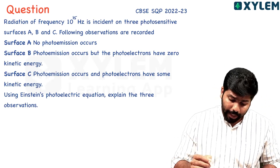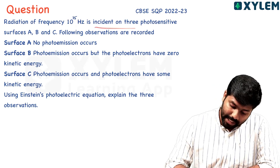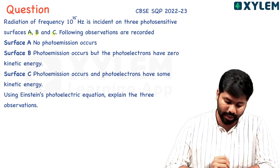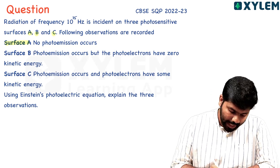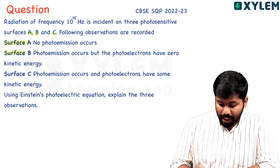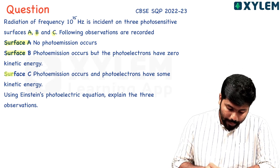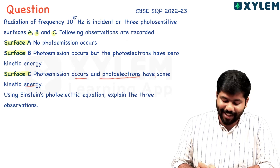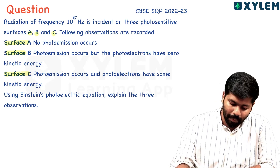Second question: Radiation of frequency 10¹⁵ Hz is incident on three photosensitive surfaces A, B, and C. The following observations are recorded: Surface A — no photoelectric emission occurred. Surface B — photoemission occurs but photoelectrons have zero kinetic energy. Surface C — photoemission occurs and photoelectrons have some kinetic energy. Using Einstein's photoelectric equation, explain the three observations.